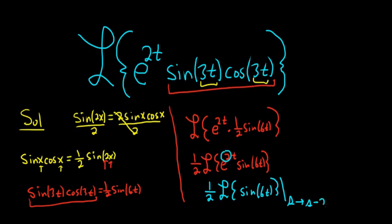So if you have the Laplace of e to the at f of t, the shifting theorem says that this is the Laplace of f. And then you just replace the e with the shift, s to s minus a. So in our problem here, a was 2. If it was like a negative 2, then you would have a plus 2 here.